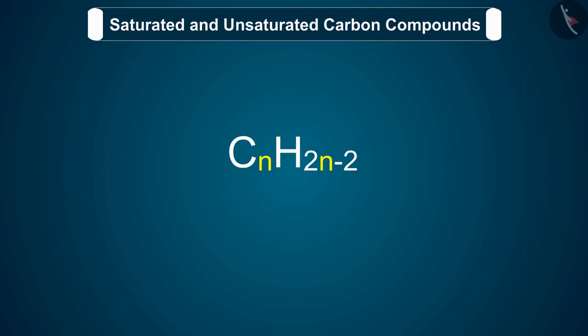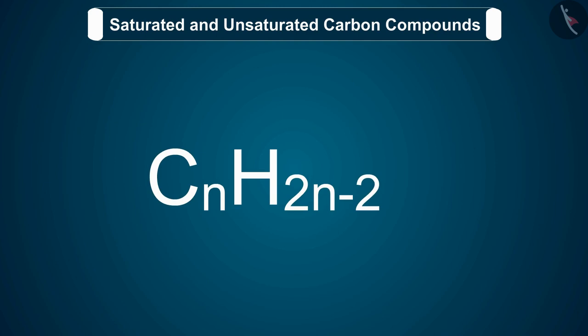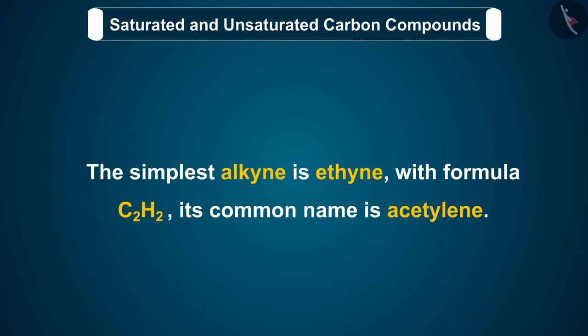The general formula of alkynes is CnH2n-2, where n is the number of carbon atoms in one molecule of alkyne. For example, if an alkyne has two carbon atoms, then n equals 2, and its formula will be C2H2, which is ethyne. Similarly, if we take n equal to 3, we get propyne. The simplest alkyne is ethyne, with formula C2H2, and its common name is acetylene.